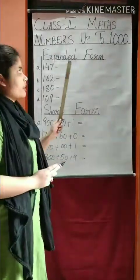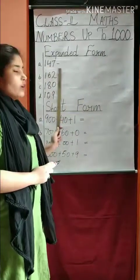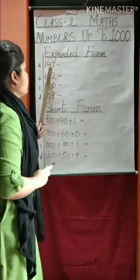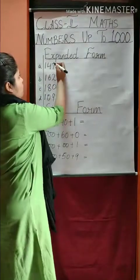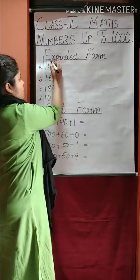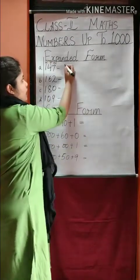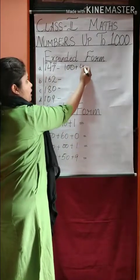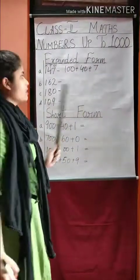The next heading is expanded form. The number is already given and you have to expand each and every digit. The first one is 117. So 7 is in the 1's place, 1 is in the 10's place, and 1 is in the 100's place. We write one hundred plus forty plus seven.